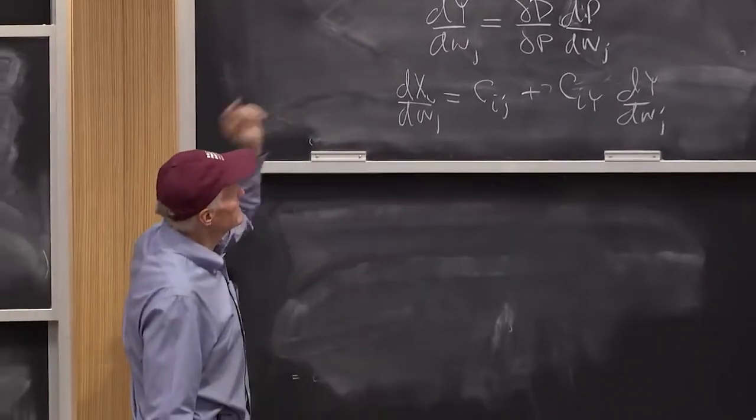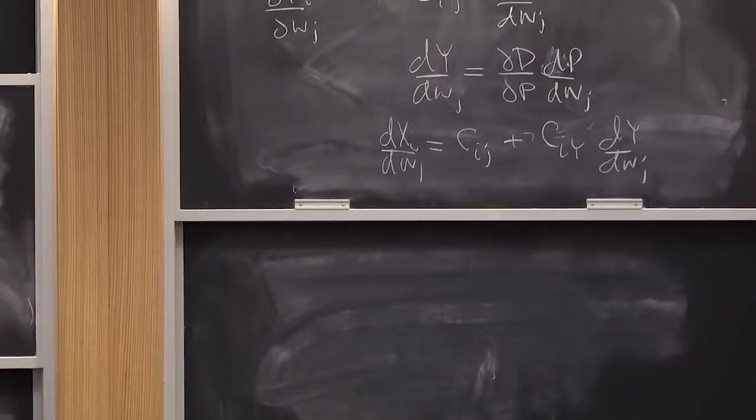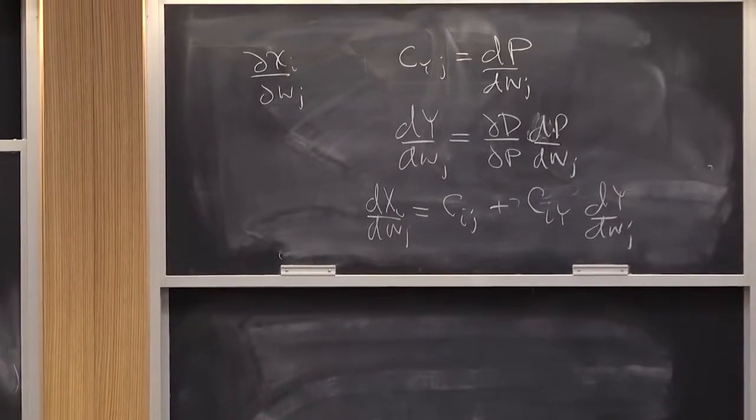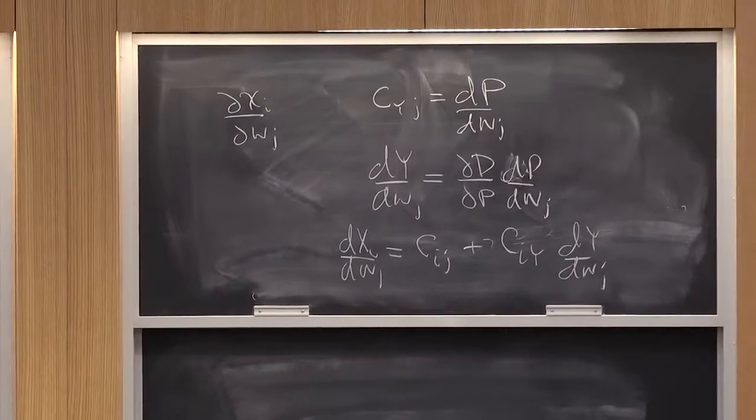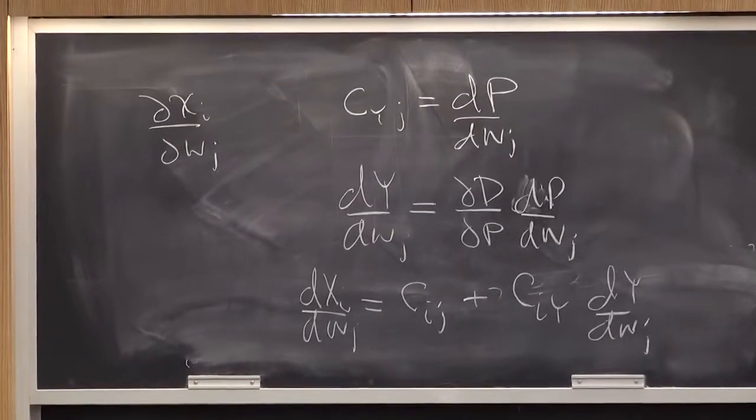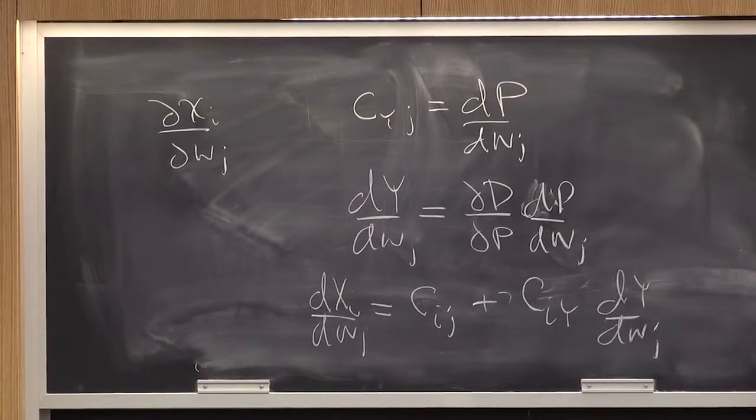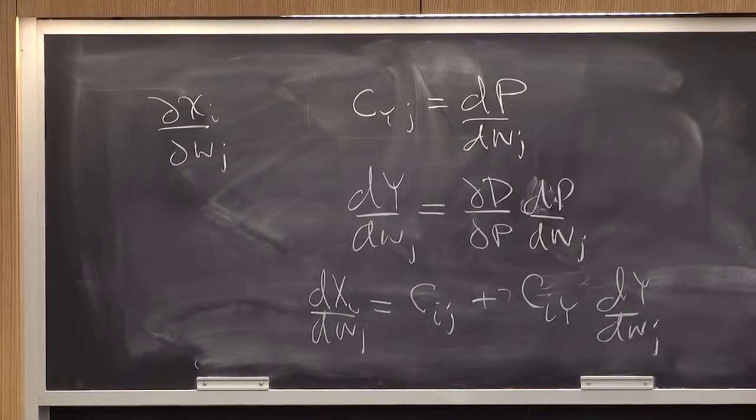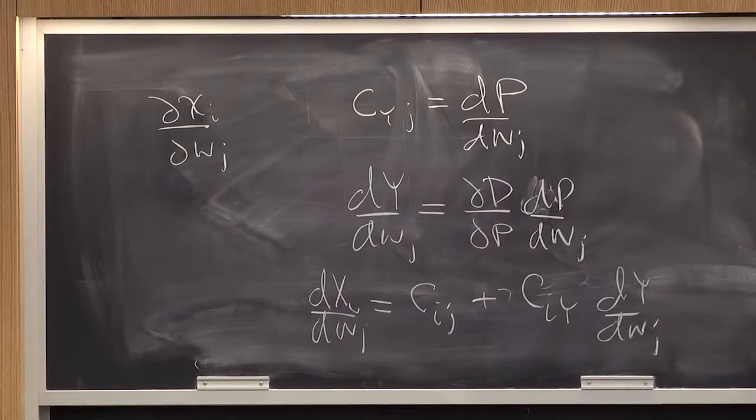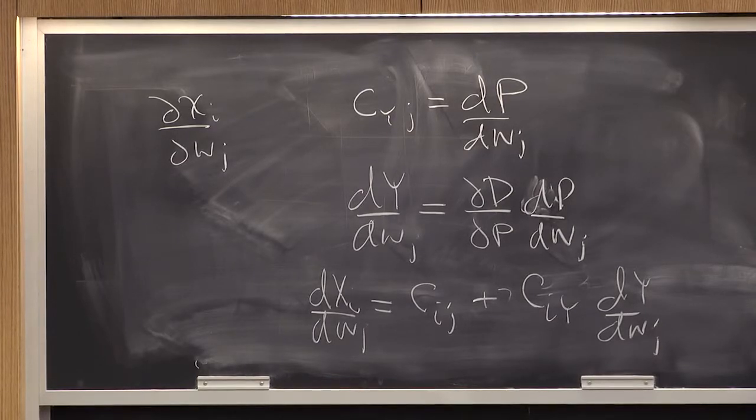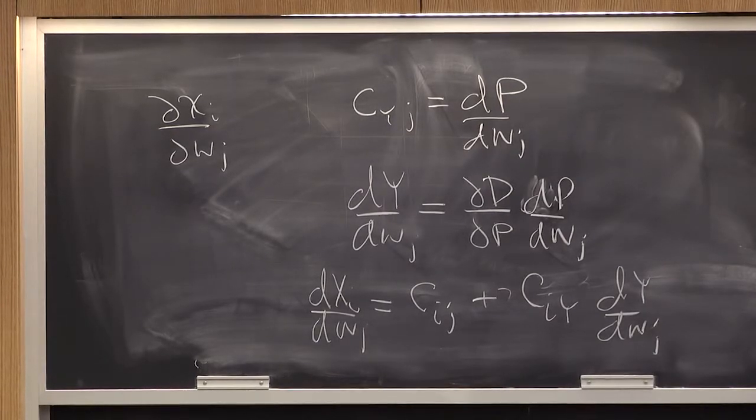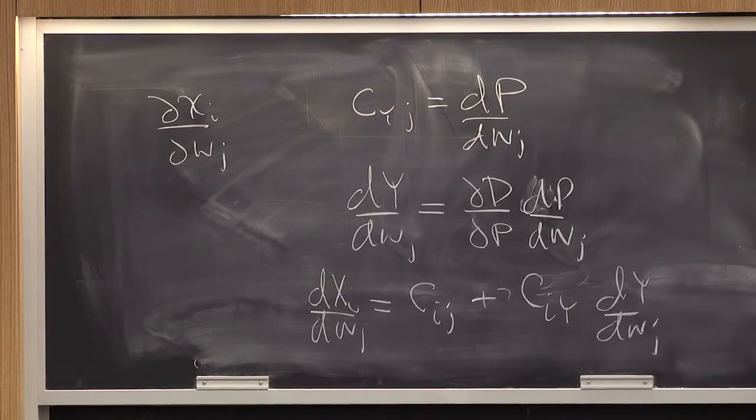What's cij with constant returns to scale? Well, cij is the same as cj, y, right? What is cj? cj is the demand, is xj, right? So, what's the derivative of xj with respect to output? Well, it's constant returns, right? So, xj just moves proportionately with output.